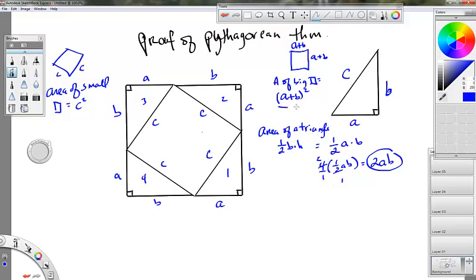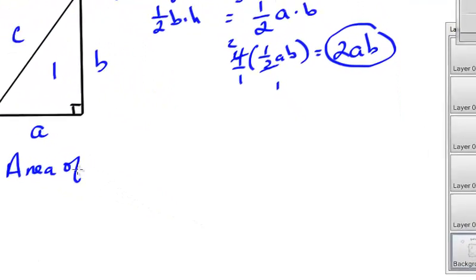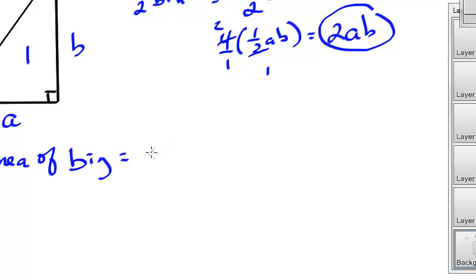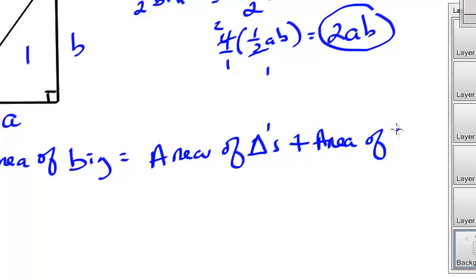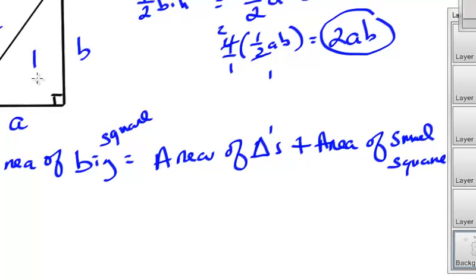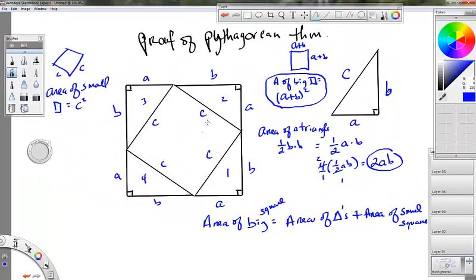So, the area of the big triangle should, watch this, area of big should equal the area of triangles plus area of small square. The area of the big square, just think about it. It makes total sense. The area of the big square should equal the area of all the stuff, all five shapes inside. The little square plus all the triangles.